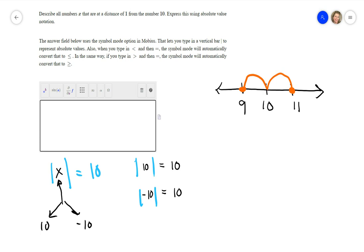Absolute value is simply a distance that you are from a number on the number line. So up here in the orange, when I go 1 to the right, that's a move of 1 unit to the right. If I go to the left, that's also 1 unit.